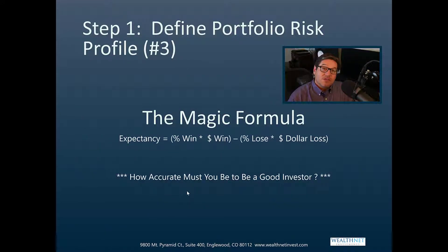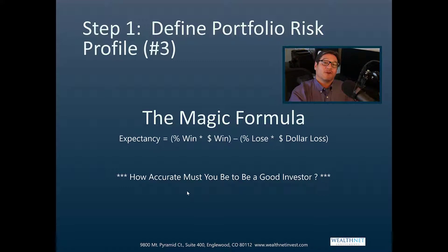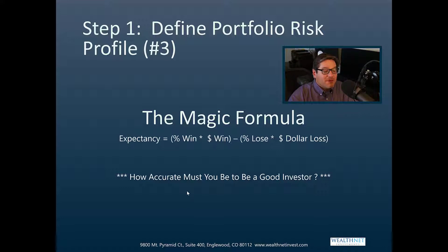Still in step one, I want to point out this magic formula — the formula of expectation — because it really defines the big levers that determine our position sizing. Those levers are: the percentage of time that we're right, the percentage we're wrong, and how much money we make when we're right versus how much we lose when we're wrong. When you put them together — percentage win times dollar win, minus percentage loss times dollar loss — that gives us our expectation. This formula applies to any investor or trader. You really want to minimize the right-hand side of that equation — how much you lose.